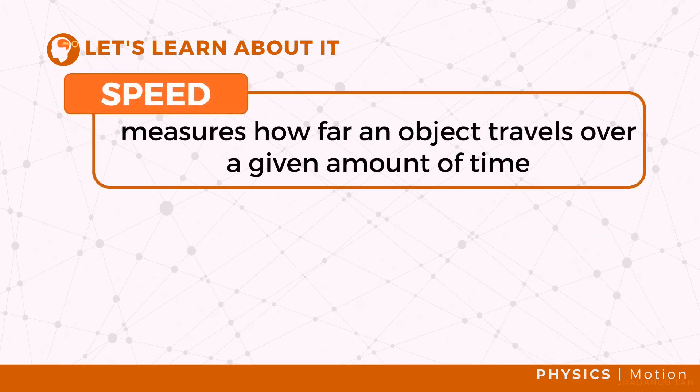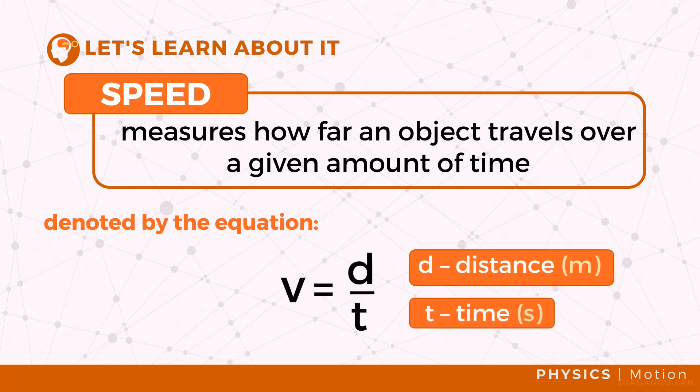Another way to describe the motion of an object is by means of its speed. Speed measures how far an object travels over a given amount of time. It is measured as distance per unit of time. Units such as miles per hour and meters per second also measure speed.